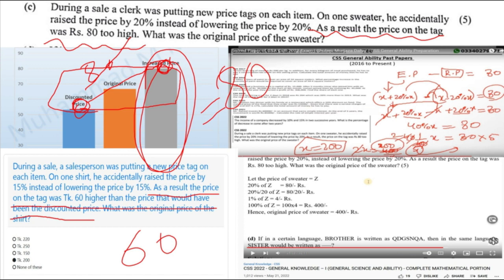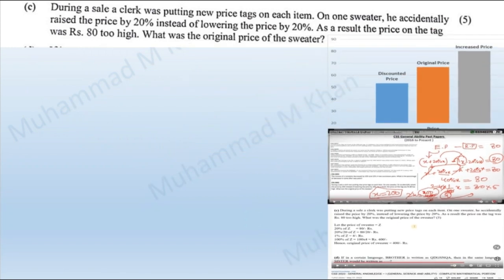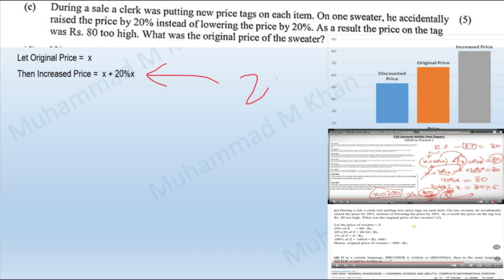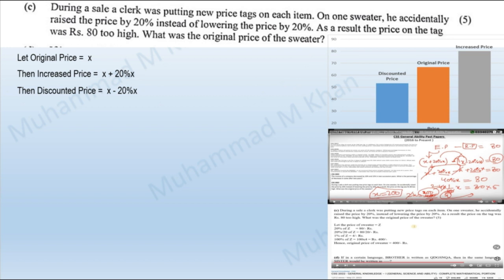That's how this solution differs from solutions on websites like Brainly — something the copy-paste teachers didn't account for, and so they presented wrong solutions to aspirants. Since I've built a conceptual framework, let me now move to the solution. If we assume the original price to be x, then the increased price would be x plus 20%, as the sales clerk inadvertently increased the price by 20% instead of decreasing it. The discounted price would have been x minus 20%.